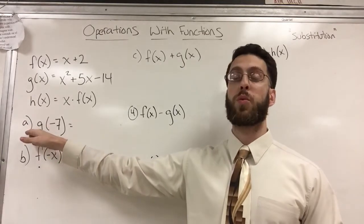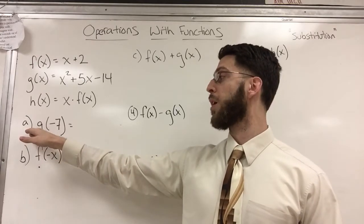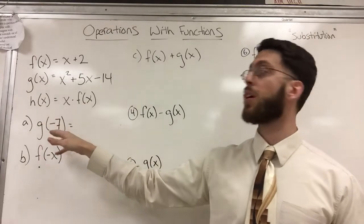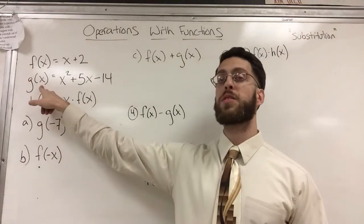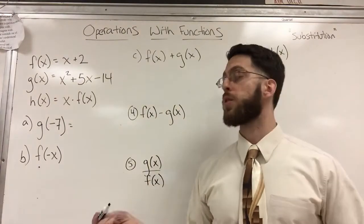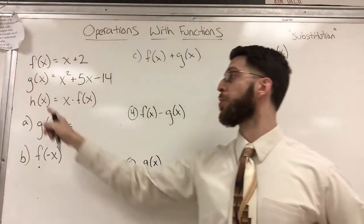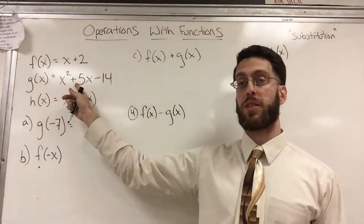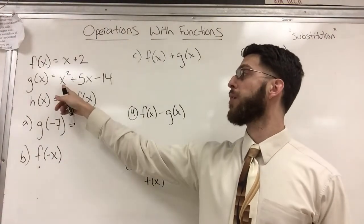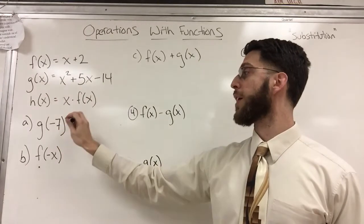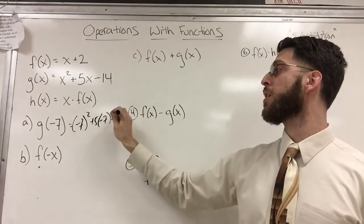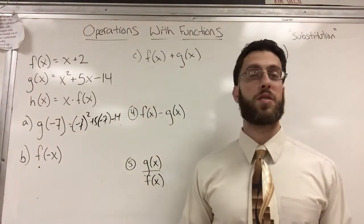First, let's get comfortable with what a function is. For part a, I just want to evaluate g of negative seven. Well, g of x, meaning g of any number, is this formula here. So all I'm going to do is replace it. Wherever I see an x, I'm going to replace it with negative seven. Find and replace. Found it, replace it. So that's negative seven squared plus five times negative seven minus 14. Simple as that.